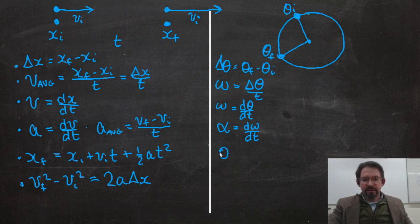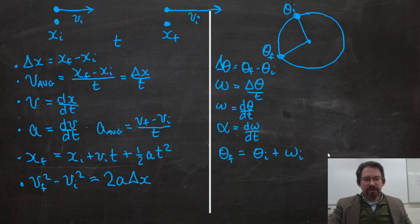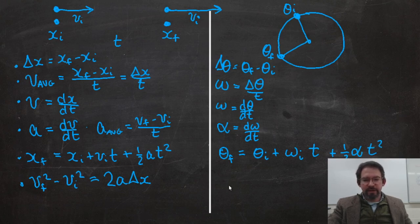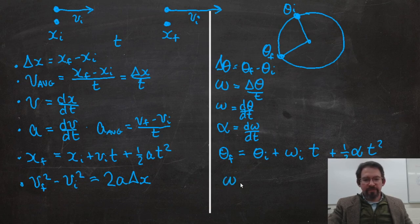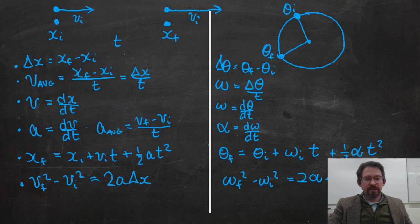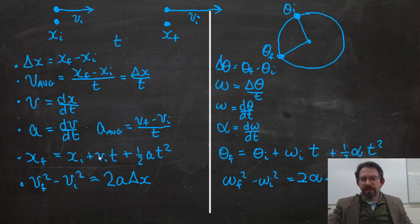So, what's this going to be? Well, every time I have an x, I replace it with a theta. Theta final equals theta initial plus how many radians per second I start with, my initial angular speed times time, plus one-half, what's my acceleration called now? Alpha. One-half alpha t squared. Everything works the same, but I'm using Greek letters instead of Latin letters to describe this. So, what would this relationship be? omega final squared minus omega initial squared equals 2 alpha delta what? Delta theta.